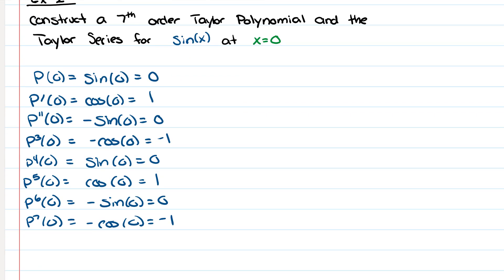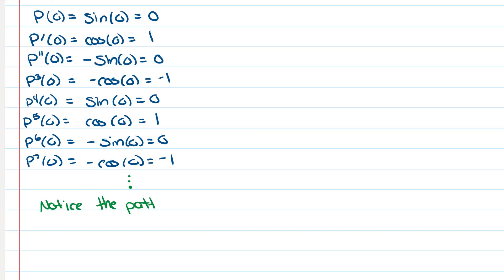After seven derivatives, we notice that the values cycle: 0, 1, 0, -1, 0, 1, 0, -1. If we keep going forever, we get the repeating pattern 0, 1, 0, -1, 0, 1, 0, -1, and so on.